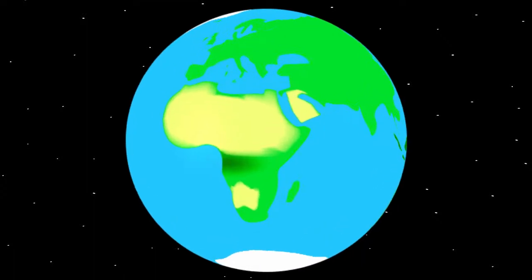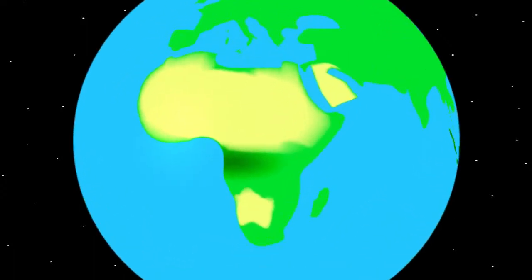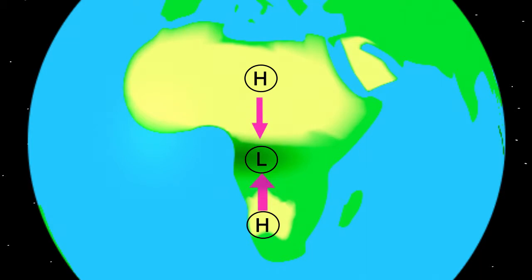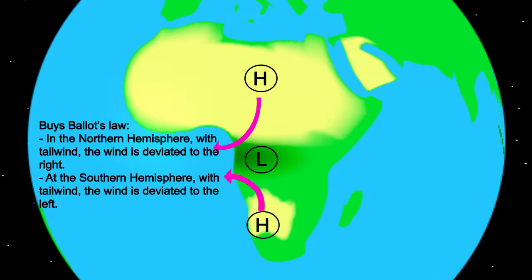In one of the other explanations you have already learned that the wind wants to flow over the surface of the earth from a high to a low pressure area. Because of the Coriolis effect the wind gets a deviation. According to the law of Buys-Ballot, this deviation in the northern hemisphere is to the right with the wind in the back, and in the southern hemisphere to the left with the wind in the back. The wind therefore does not flow in a straight line from the high pressure area to the low pressure area.